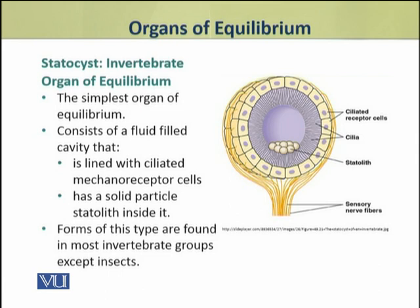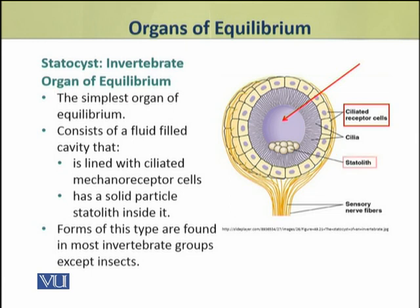A statocyst is a simple organ which consists of a fluid-filled cavity. This cavity is lined with ciliated mechanoreceptor cells. Inside the cavity there is a solid particle which is called a statolith. This form of organ is found in most invertebrates, except a major group which is insects — they do not have statocysts.